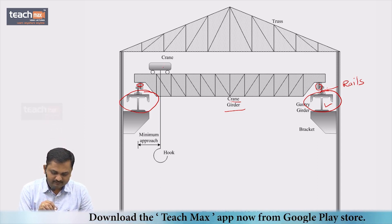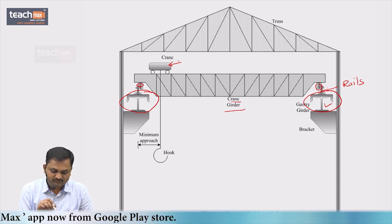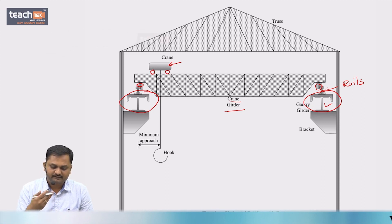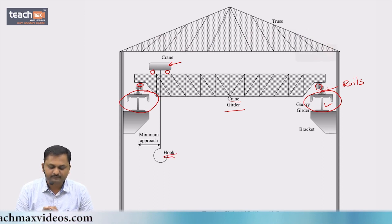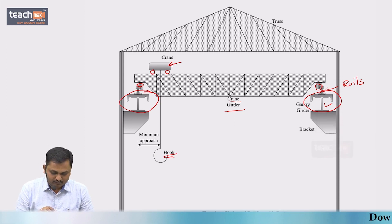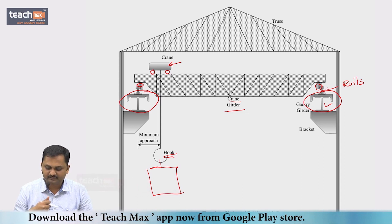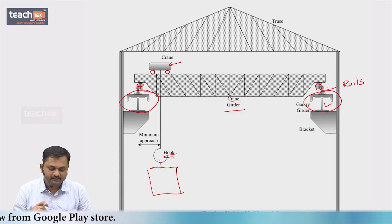The trolley is placed on the crane girder and has two wheels on each parallel crane girder, giving four wheels in total. A hook is provided on the trolley to attach heavy loads. This allows heavy equipment to be transferred and moved from one end of the building to another — that is the function of the industrial building.